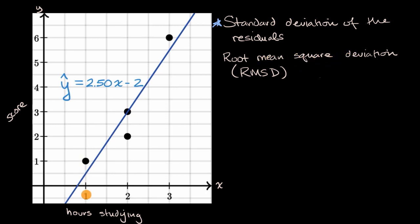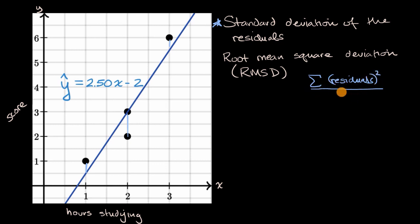What we're going to do is for every point calculate the residual, then square it, and add up the sum of those squared residuals. Then we're going to divide that by the number of data points we have minus two. We can talk in future videos, or a more advanced statistics class, about why you divide by two — it's related to the idea that what we're calculating is a statistic and we're trying to estimate a true parameter, and n minus two does the trick. To calculate the root mean square deviation, we then take the square root of this.